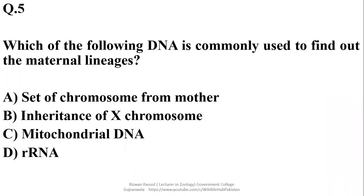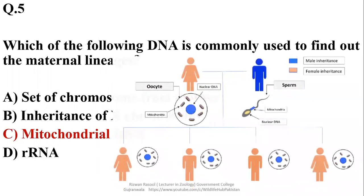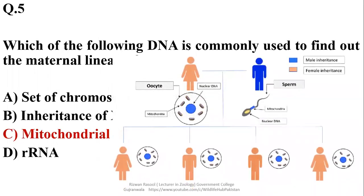Which of the following DNA is commonly used to find out the maternal lineages? As we know the mitochondrial DNA is inherited from mother cells or oocytes only. That's why it is used to find out maternal lineages. For example in this case you can see a sperm only donates its nuclear DNA, it only donates its nucleus, while the mitochondria they are received in a zygote from maternal site. That's why as far as mitochondrial inheritance is concerned it is searched out in a paternal lineage.